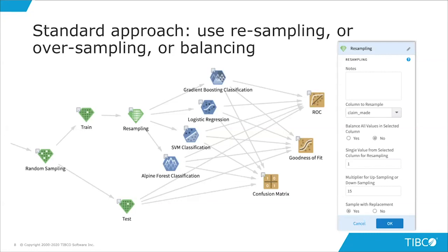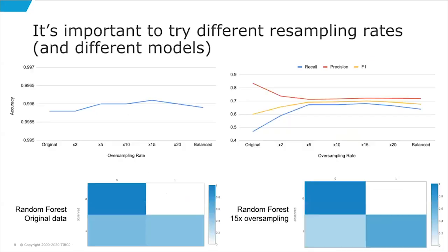In general, from my experience, this works well especially with ensemble tree methods like random forest and gradient boosted trees. Colleagues have said SVM is particularly good for rare events, though that's not what I've seen in this example — it's very data-dependent. The most important thing is to try different resampling rates; balancing in particular may not be optimal.